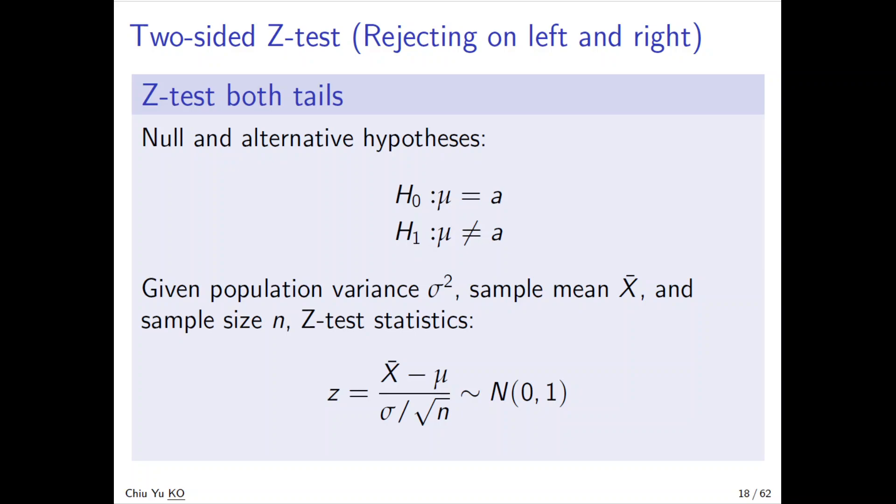So now we talk about the two-sided test to reject both left and right. The reason why you want to have a test on both sides is you don't know whether you want to reject on either side. It's equal or not equal to. So given the population variance sigma squared, sample mean, and sample size...